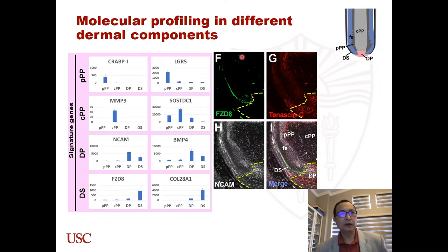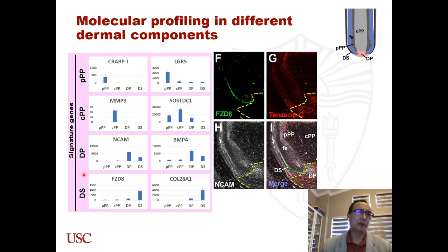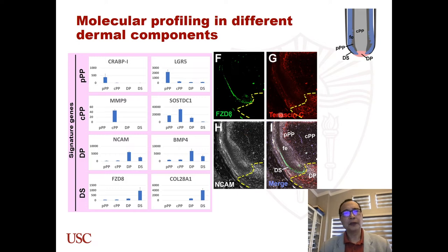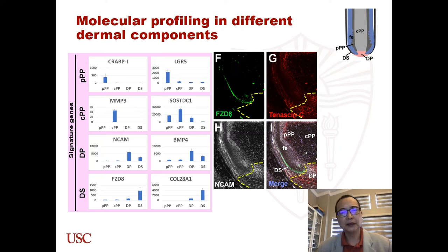Next, we performed bulk RNA-seq on different dermal components from the growth phase to find the signature genes in different dermal components. We used in situ hybridization to confirm the results. For example, here we see that one candidate gene is highly expressed in the dermal sheath, and the in situ hybridization data supports it.